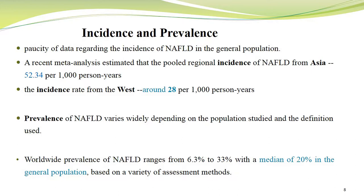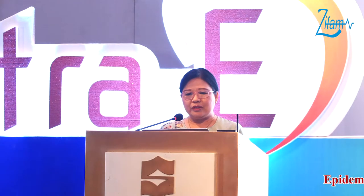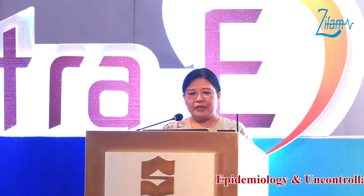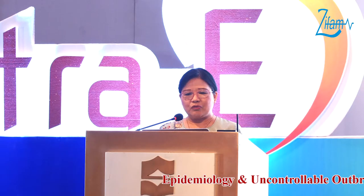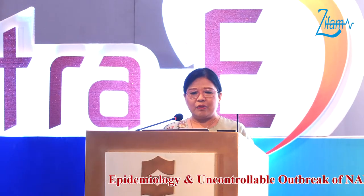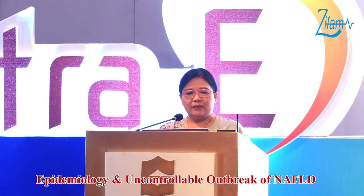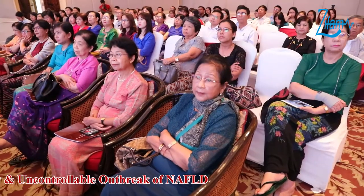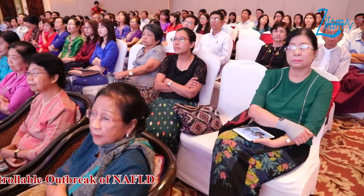Recent meta-analyses estimate the regional incidence of NAFLD from Asia at around 52.34 percent and the incidence rate from the West at around 28 percent. Prevalence of NAFLD varies widely depending on the populations studied and definitions used, ranging from 6.3 percent to 33 percent with a median of around 30 percent. A 2016 study showed the global prevalence of NAFLD is 25 percent, and the global prevalence of overweight and obesity is approximately 39 percent.